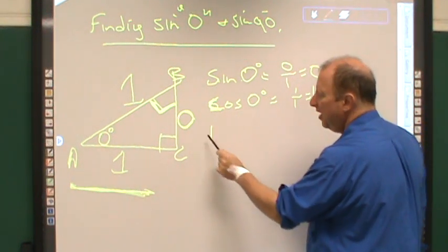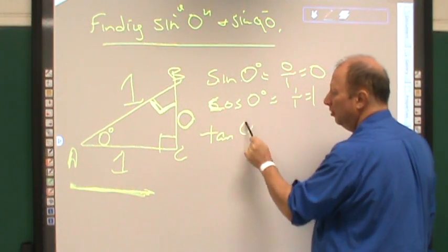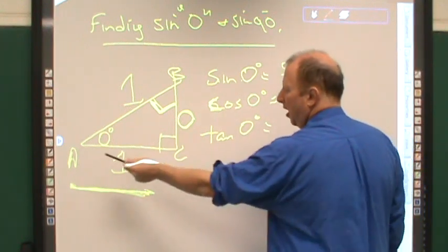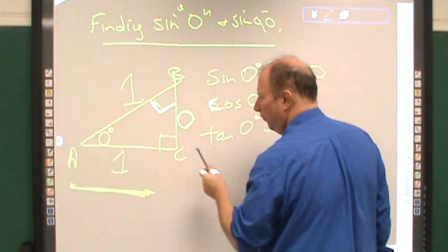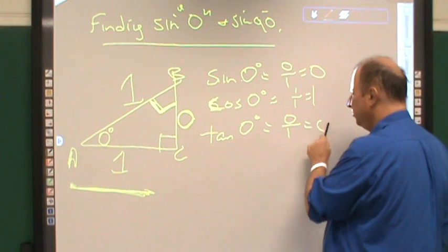And then tangent of zero is opposite over adjacent, zero over one, which is zero.